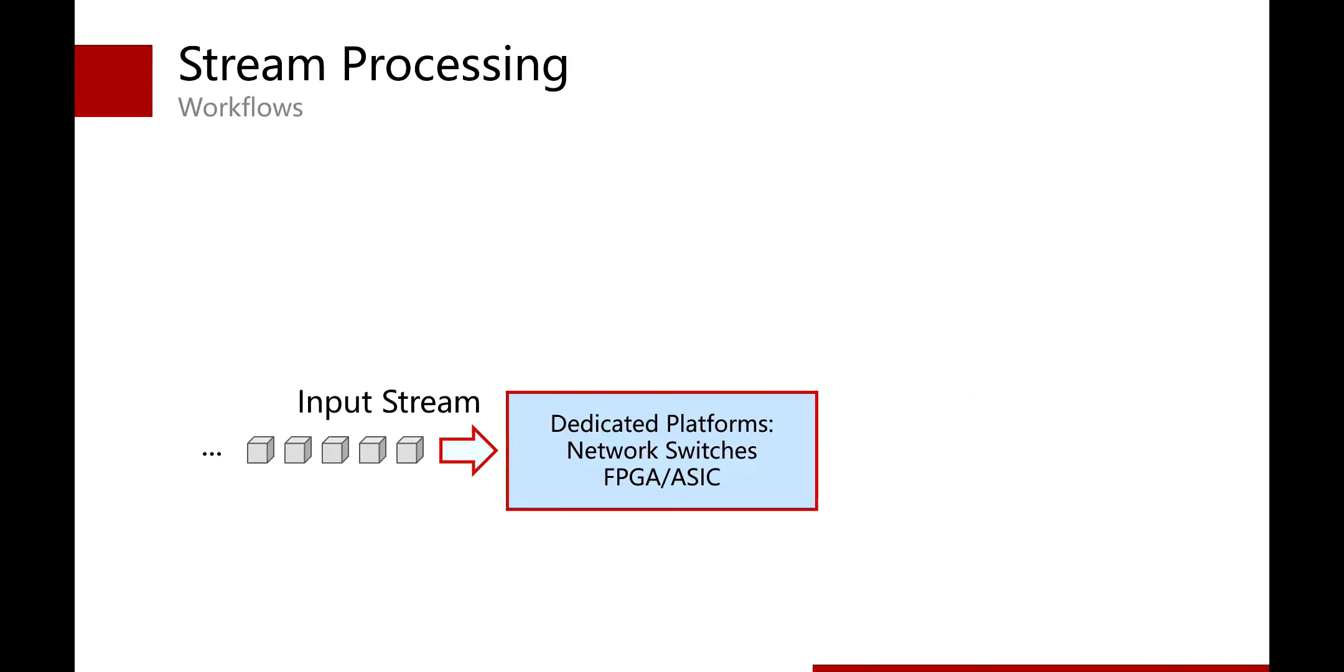In this paper, we focus on extremely high-speed data stream processing, for example, the packet stream in the network. To handle the high-speed data stream, we often process the stream in dedicated hardware platforms, including network switches, FPGA and ASIC.